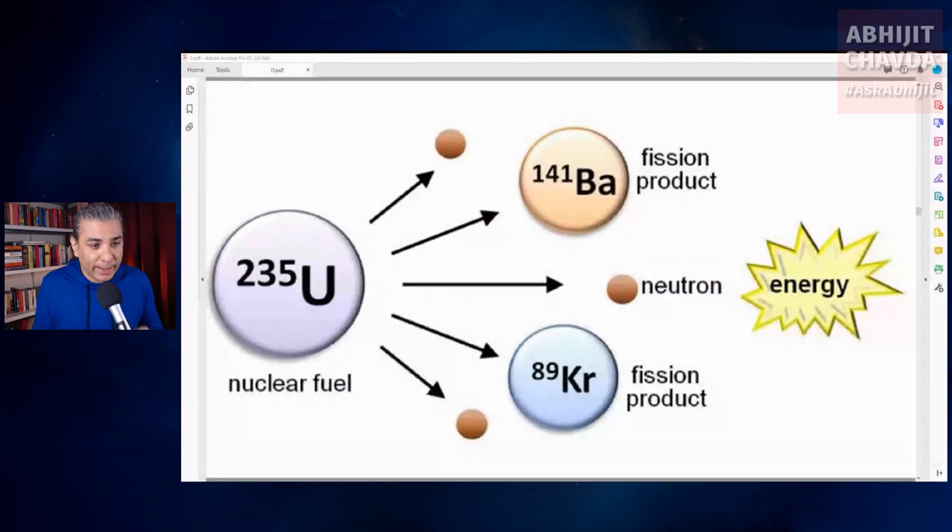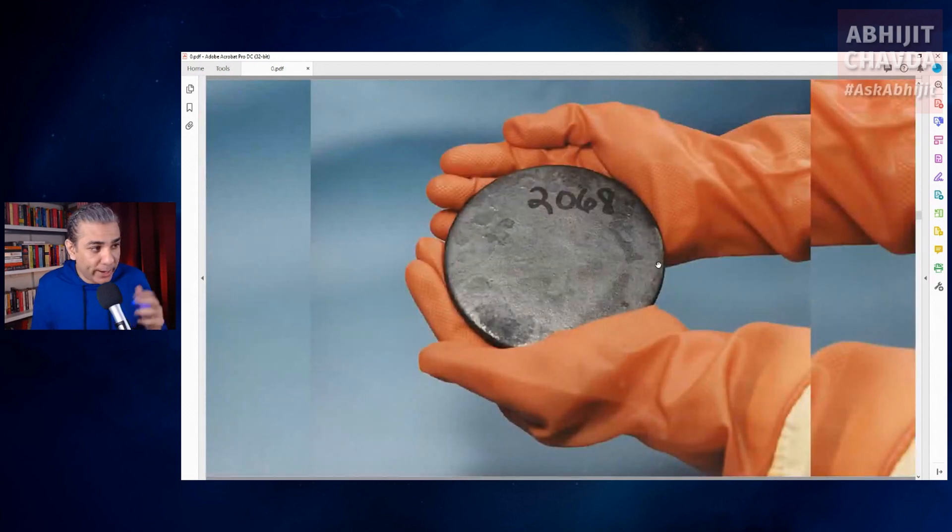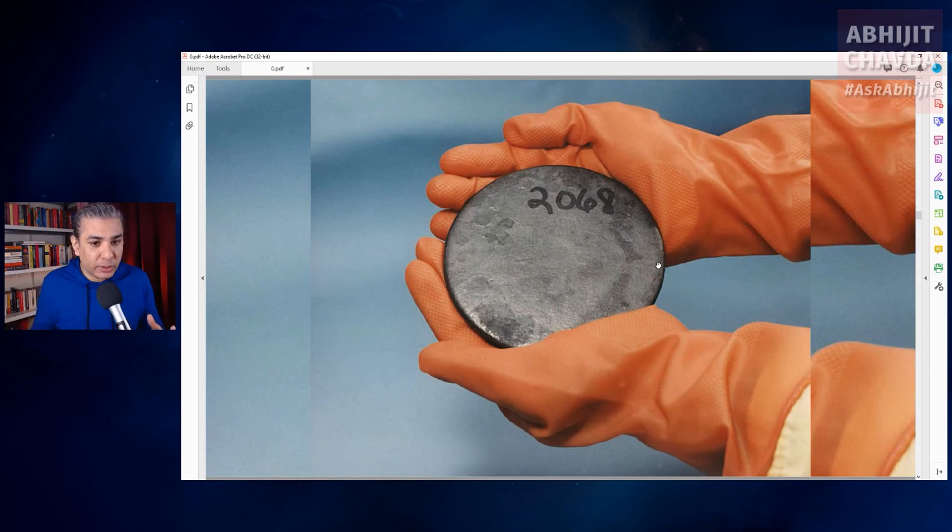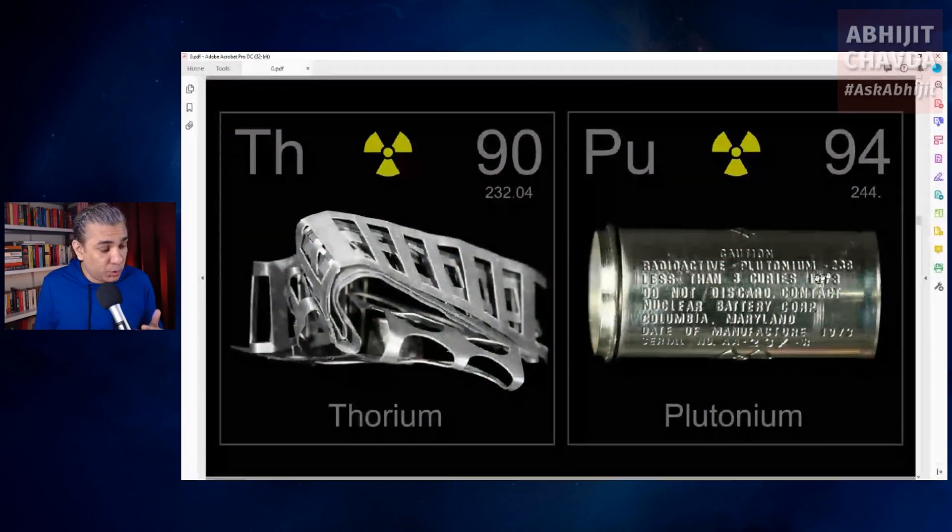Atoms of heavy, unstable elements such as uranium undergo spontaneous fission. Uranium is naturally radioactive. It constantly undergoes spontaneous fission at a very slow rate. Other elements such as thorium and plutonium are also naturally radioactive.